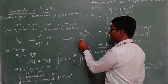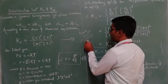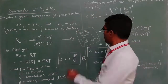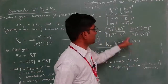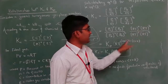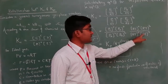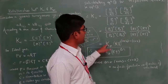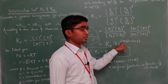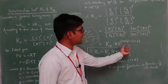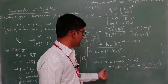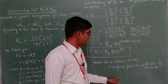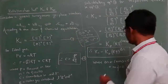Applying the second exponent rule — a^x / a^y = a^(x−y) — the RT terms simplify to RT^(a+b−c−d). Therefore, Kc = Kp · RT^(a+b−c−d), where (a+b−c−d) is nothing but Δn. Delta n is the number of moles of products minus the number of moles of reactants. This gives us the relation between Kp and Kc — Equation 3.